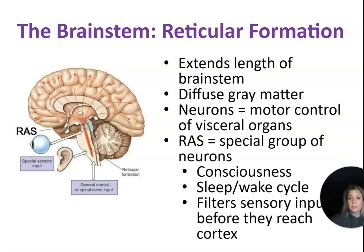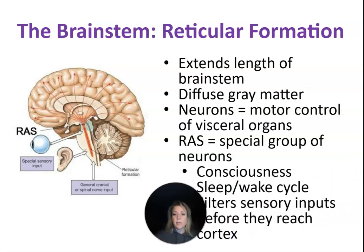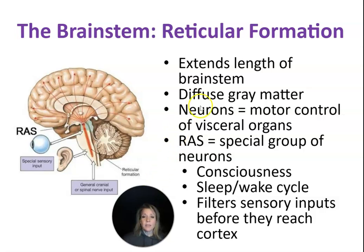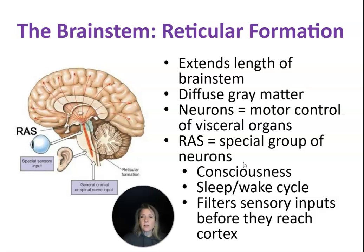The reticular formation is found within the brainstem. It's a diffuse collection of neurons that are under motor control of visceral organs. The RAS — reticular activating system — is a very special group of neurons that plays a role in consciousness and regulation of our sleep-wake cycle, and it also acts as a filter for what information actually gets into the cerebral cortex for us to respond to.